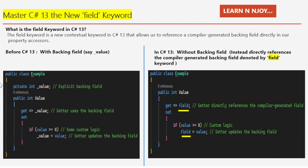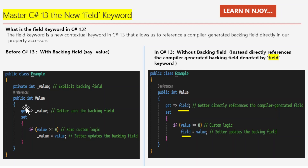Let's review the example showing how we used to write a property with custom logic before C# 13 — using a backing field called underscore value. Here there is a public class named Example. Inside this class, there is a private integer field named underscore value that stores the actual value. It is labeled as a backing field because it holds the data for the public property. Next, there is a public property named Value of type int.